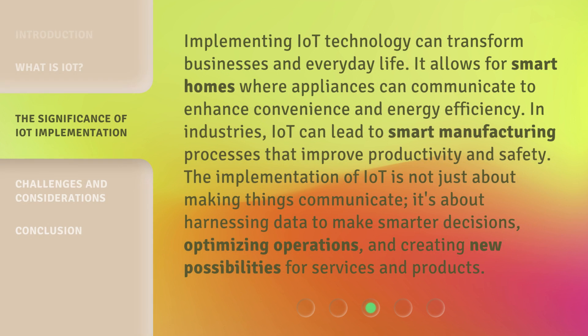Implementing IoT technology can transform businesses and everyday life. It allows for smart homes where appliances can communicate to enhance convenience and energy efficiency. In industries, IoT can lead to smart manufacturing processes that improve productivity and safety. The implementation of IoT is not just about making things communicate — it's about harnessing data to make smarter decisions, optimizing operations, and creating new possibilities for services and products.